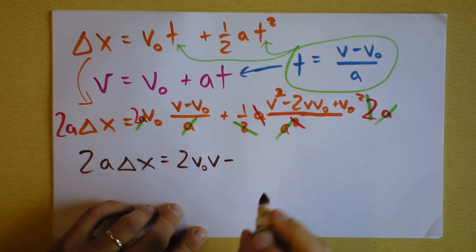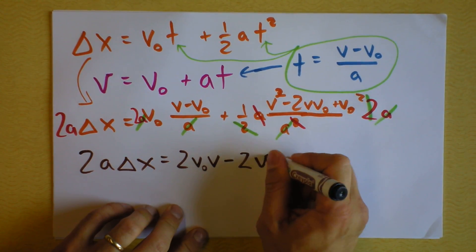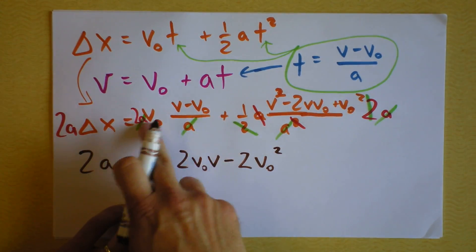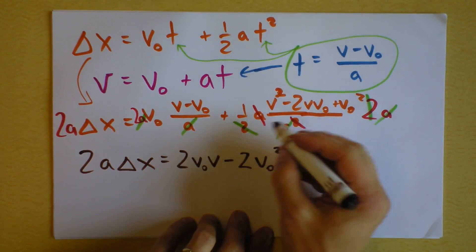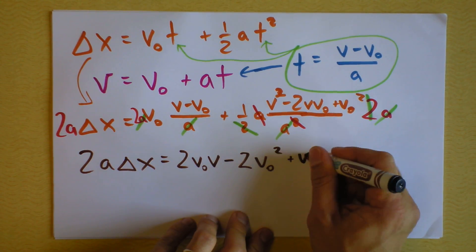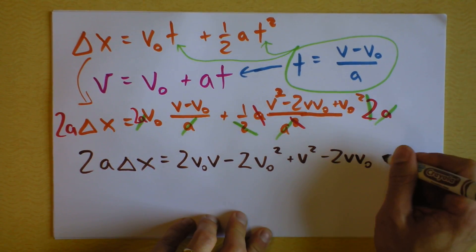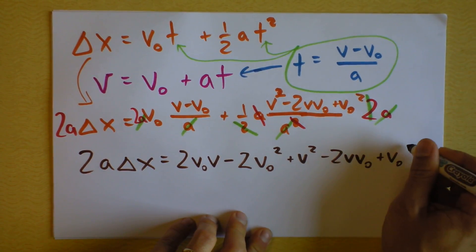Minus... Oh, shoot. Minus 2v-naught squared. That's both from this term. And then I get, let's see, all of that stuff is all dead. I just get plus v squared minus 2v v-naught plus v-naught squared.